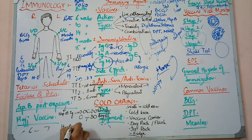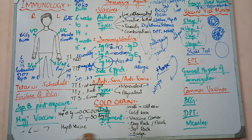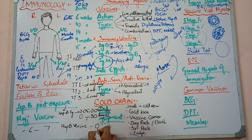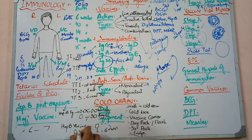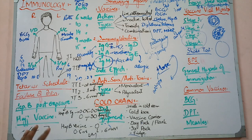Along with immunoglobulin, you also give the Hepatitis B vaccine. For both cases - whether the doctor was injured and never received vaccination, or it is a child - you give the vaccine. The vaccine schedule is 0, 1, and 6 months, given at 0.5 ml. If a doctor had received the vaccine years ago, you cannot give immunoglobulin again, but you give a booster dose. If the vaccine was given more than five years ago, a booster dose needs to be added.